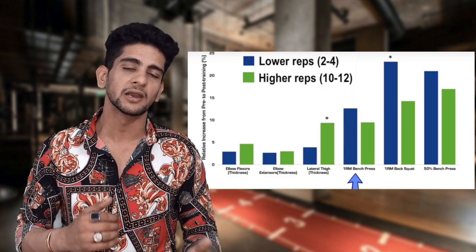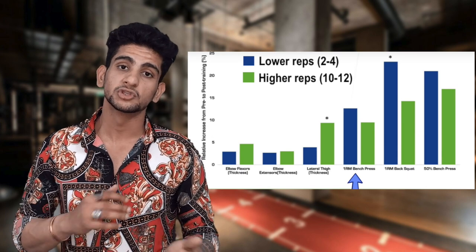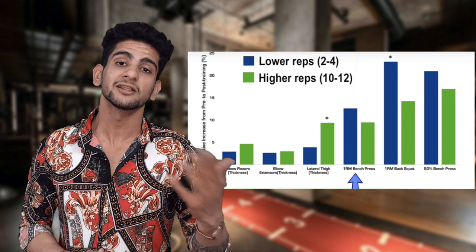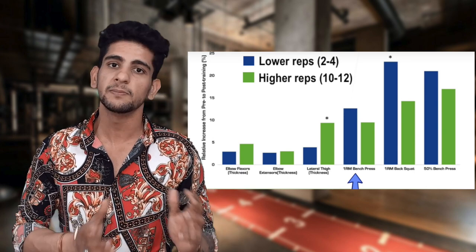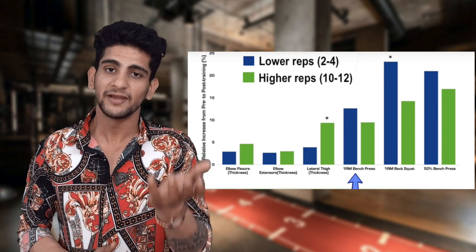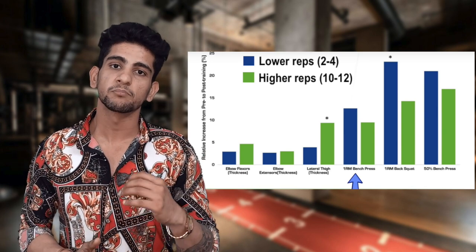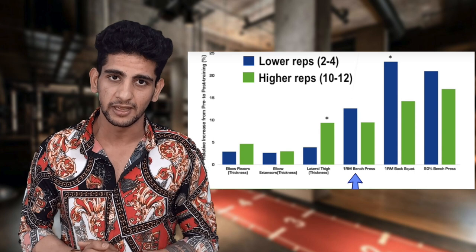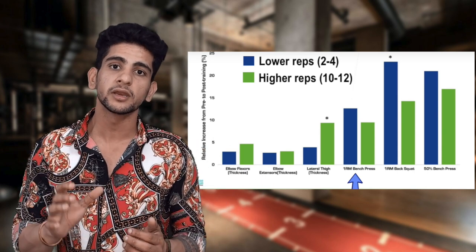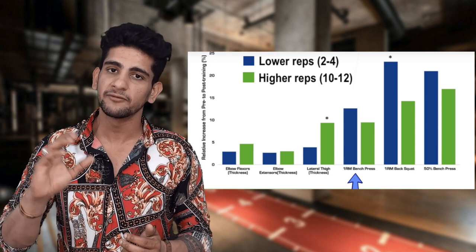In terms of one-rep maximum on squats, the heavy-weight low-rep group was able to lift more weight, showing better strength gain. However, for muscle building, the high-repetition low-weight group showed very good muscle growth. You can see in the graph that light lifters with high repetitions had comparatively better muscle growth.